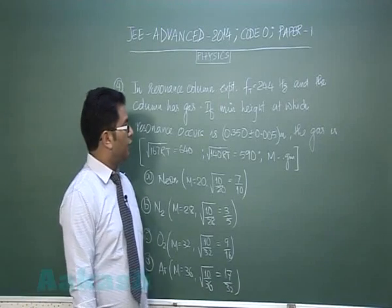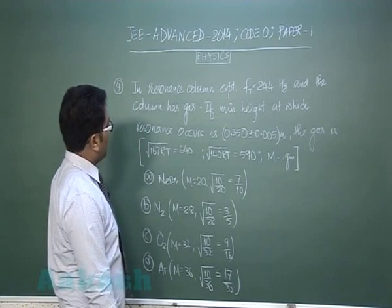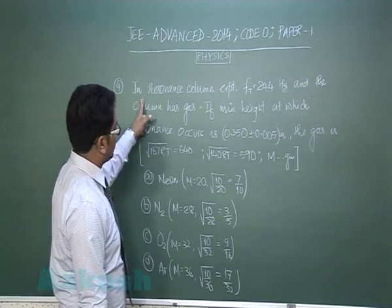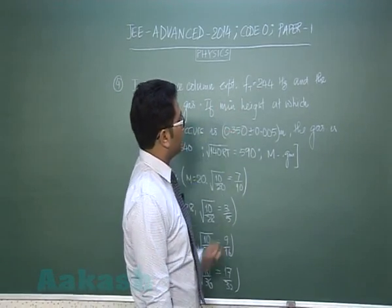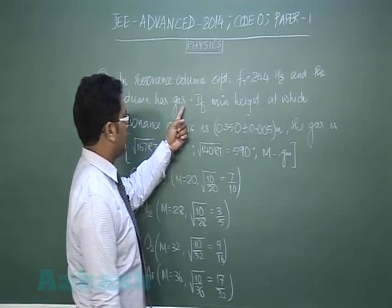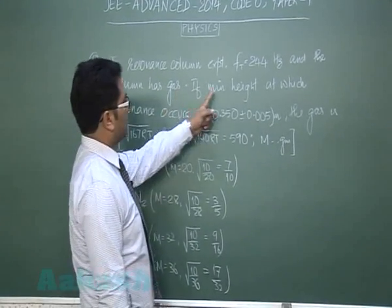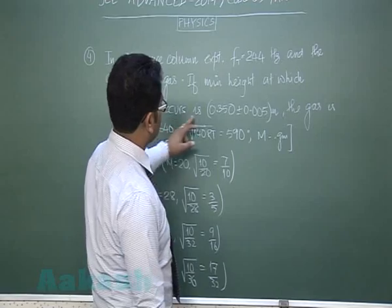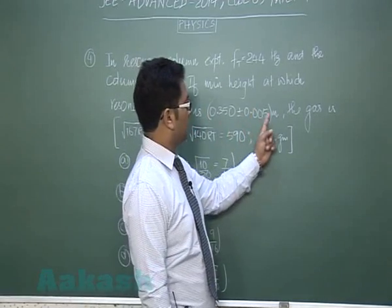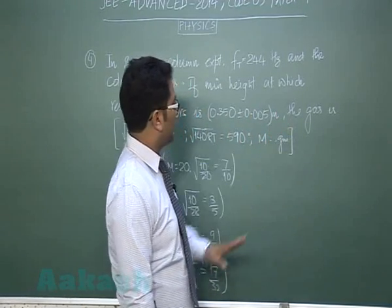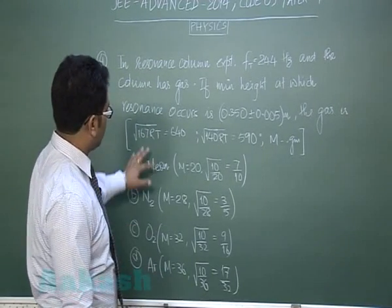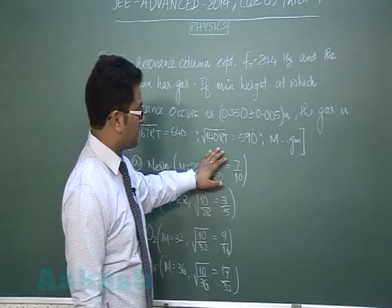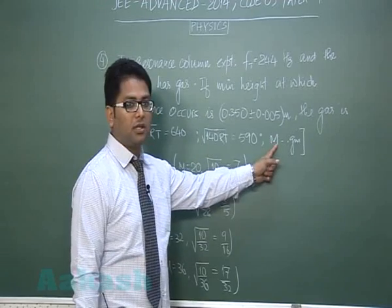Question number four is from the chapter sound and it's been brought from experimental physics. Resonance column experiment, tuning fork has this much frequency and the column has gas. The minimum height at which resonance occurs is this much meter, then we have to predict the gas.